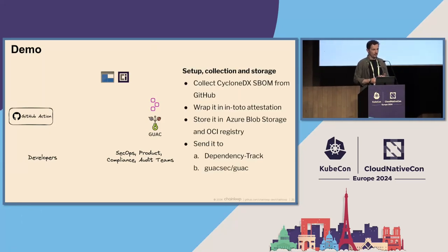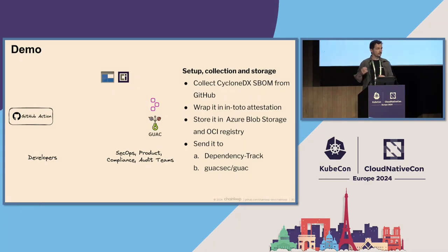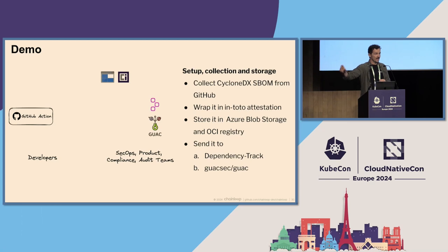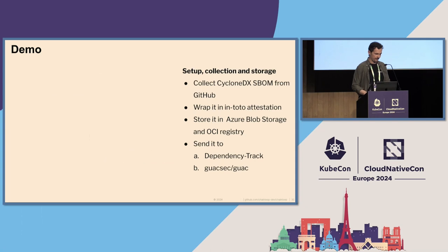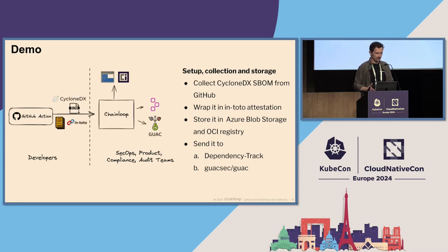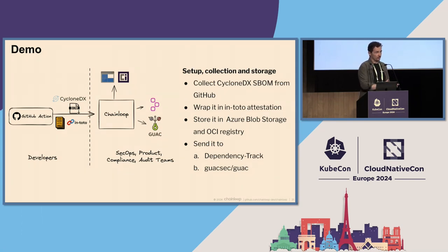What do we want to do? We want to start collecting all artifacts built by developers together with software bill of materials. We want to store it in a trusted way — wrap it in in-toto attestation. We want to push it to Azure Blob Storage and OCI registry, and we also want to send it to all these different DevSecOps tools like dependency track, Guac, and others. So we'll use Chainloop — deploying it on the right side, with an API and a contract defined between SecOps and developers.